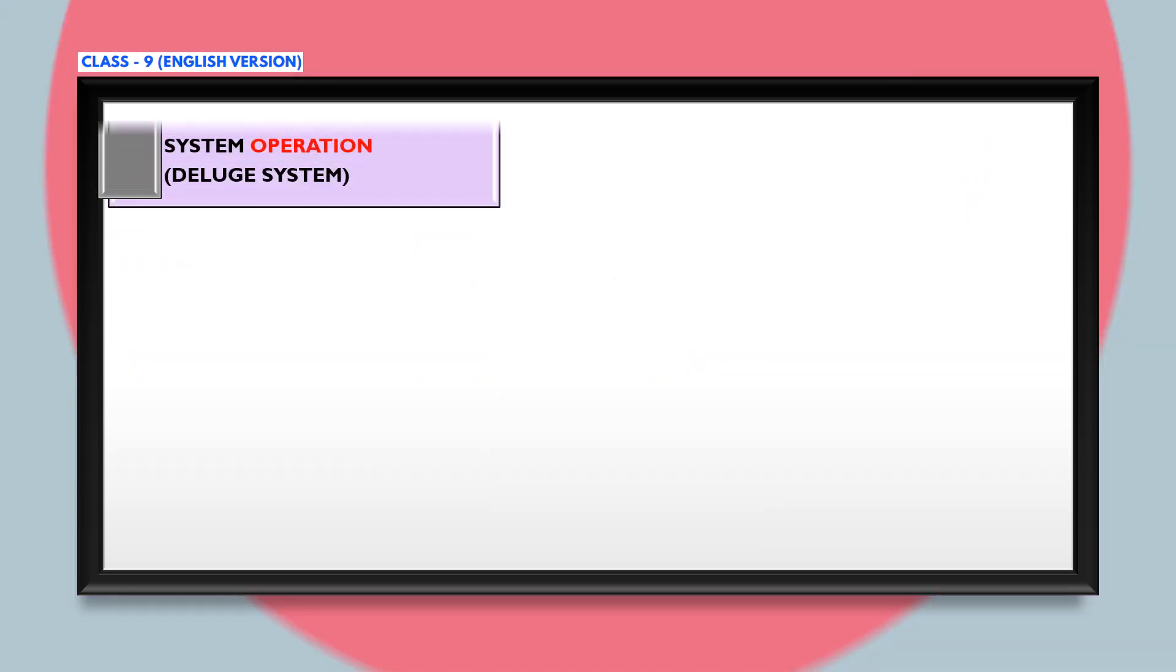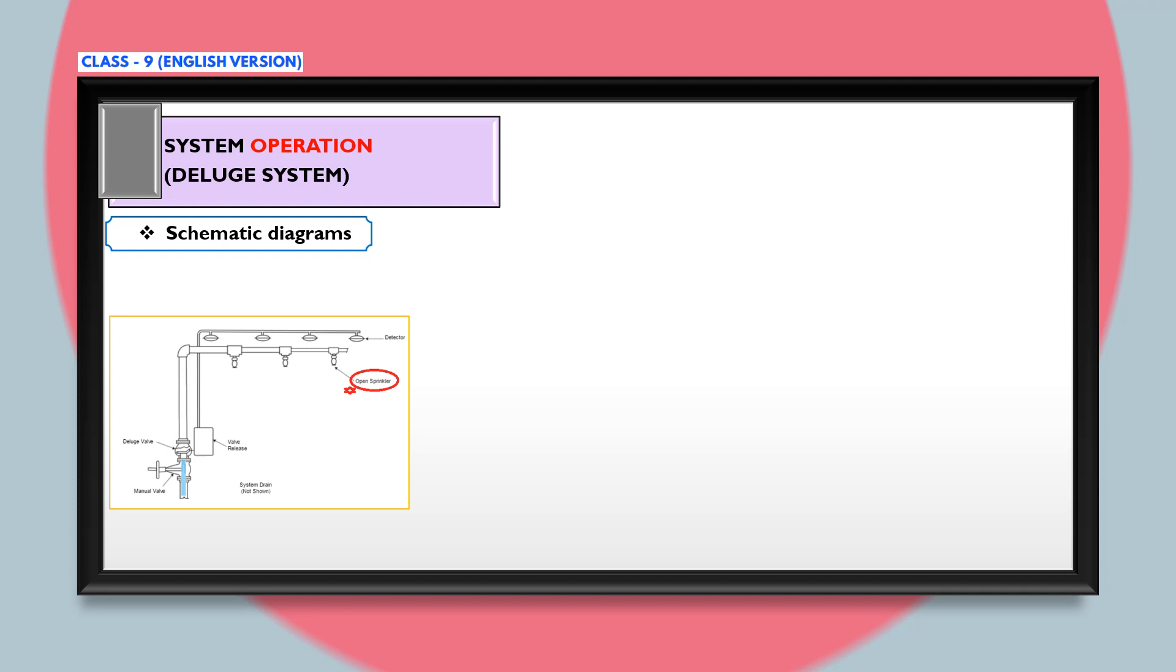Now let us understand the system operation of this deluge type in detail. As you can see on your screen, a schematic diagram shows that the water is filled till the deluge valve. A supplemental detection system with a releasing panel is installed in the same area as the open sprinklers. All sprinklers or nozzles are installed which are of open type, and there is no water in the piping above the deluge valve.